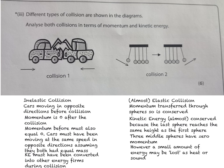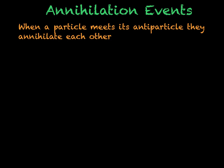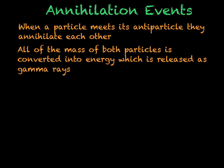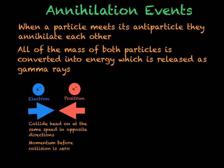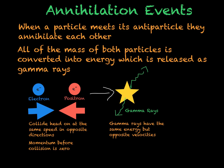We will now look at how momentum is conserved in positron-electron annihilation events. An annihilation event happens when a positron and an electron — a particle and its antiparticle — meet. All of the mass of both particles is converted into energy given off as gamma rays. They collide head-on at the same speed in opposite directions; because they have the same mass and opposite velocities, the total momentum before the collision is 0. The gamma rays produced must also have a total momentum of 0, so they are produced with the same energy but opposite velocities, moving out in opposite directions.